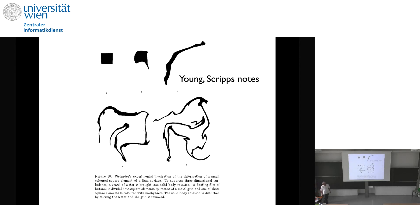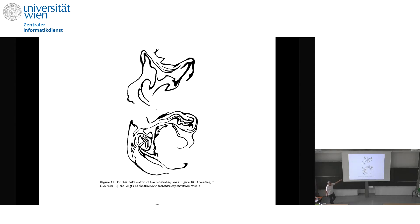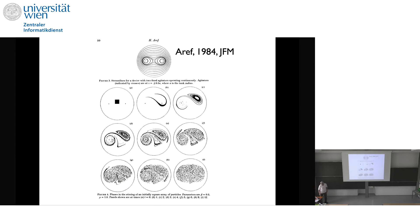Here's another example from Bill Young's notes: you put a dye patch and look at its evolution in time. If you calculate the perimeter of the patch, the perimeter is increasing exponentially in time. After some time with turbulent stirring and high-frequency motion, this is what it looks like.